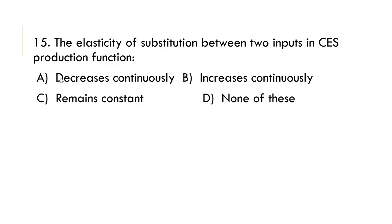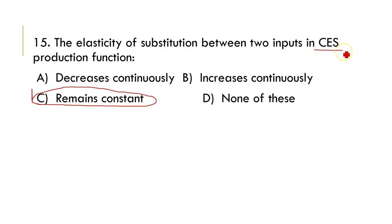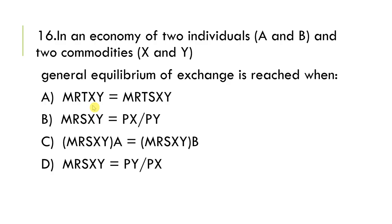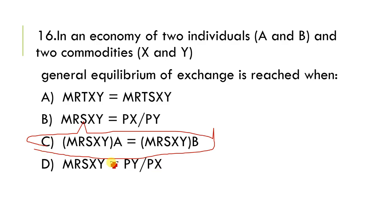Next: the elasticity of substitution between inputs in the CES production function remains constant — that is why it is called the Constant Elasticity of Substitution production function. C is the correct option. Next: in an economy with two individuals A and B and two commodities X and Y, the general equilibrium of exchange requires MRS_xy of A equals MRS_xy of B. C is the correct option.